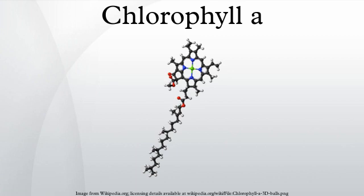For instance, the only difference between chlorophyll A and chlorophyll B is that chlorophyll B has an aldehyde instead of a methyl group at the C7 position.